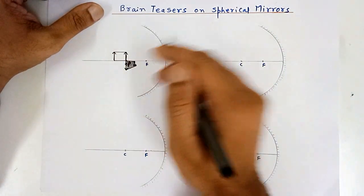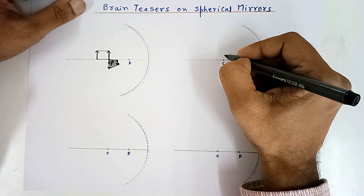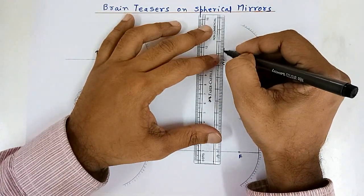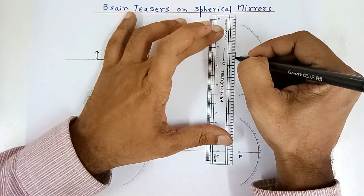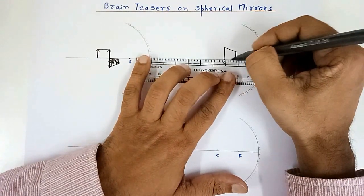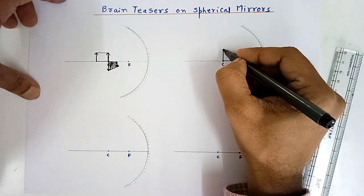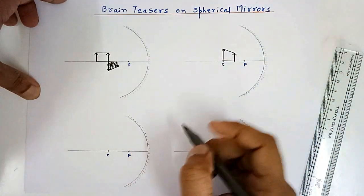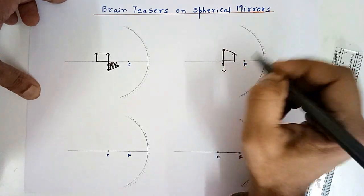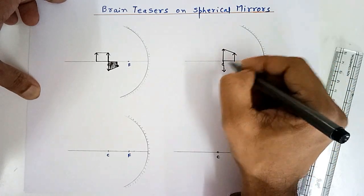Let us continue by taking another case. This time we have an irregular block object. One edge of the block is kept at C and the other edge is between F and C. We can consider this block to be made up of two different objects. Since one part is at C, its image is formed at C at the same height. Since the other part is between F and C, its image would be beyond C — larger than the object, real, and inverted.